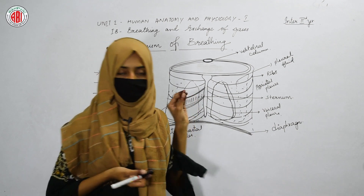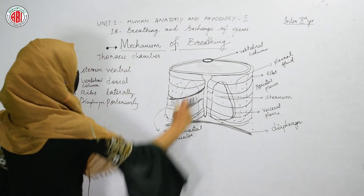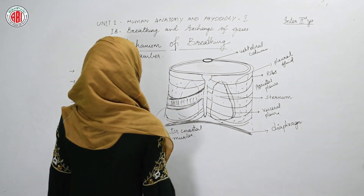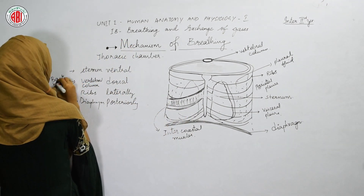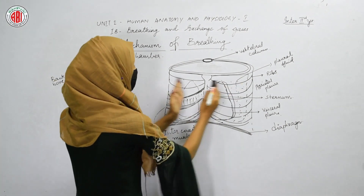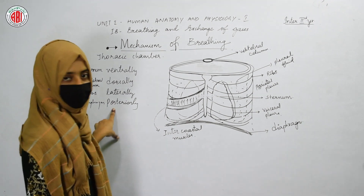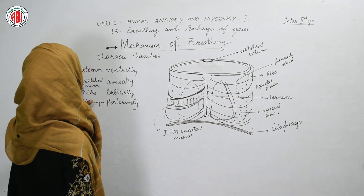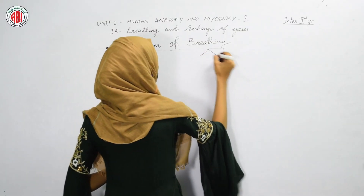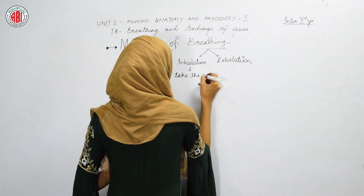The thoracic chamber is made up of the sternum, which is present ventrally, and the vertebral column, our backbone, which is present dorsally. The sternum is present ventrally, and ribs are arranged laterally. The diaphragm is present posteriorly. All of these — sternum, vertebral column, ribs, and diaphragm — make up our thoracic chamber.